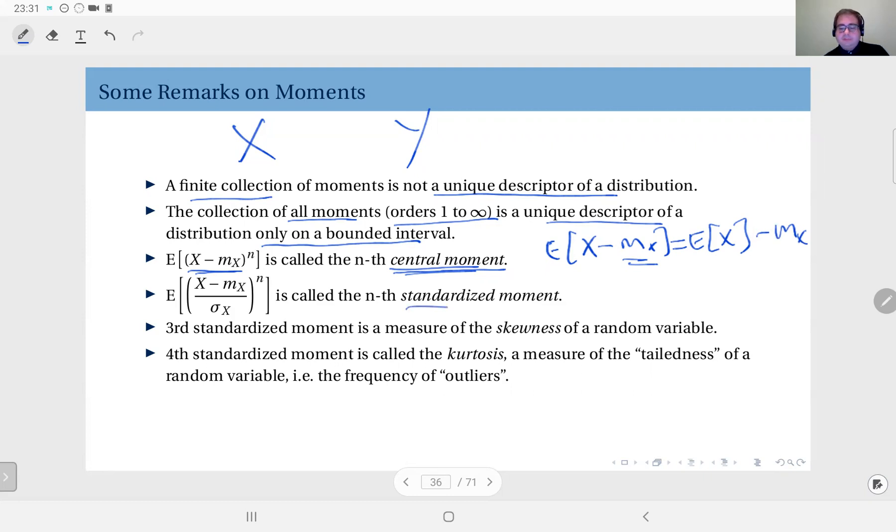And next, we have the standardized moments. Here, we go one step further. We scale it by the standard deviation so that the variance becomes one. We are going to study these in more detail later on when we study transformations of random variables, but for the time being, just bear in mind that when you shift the distribution by its mean, X minus its mean, and divide it by the standard deviation, what you get is a standardized random variable.